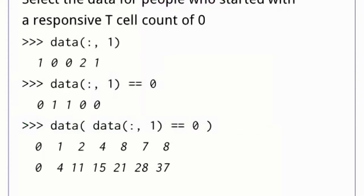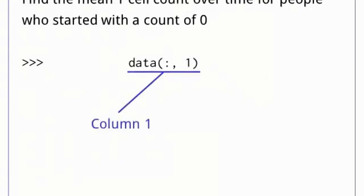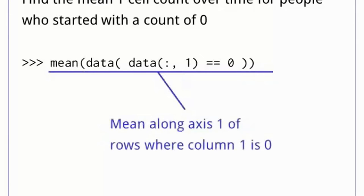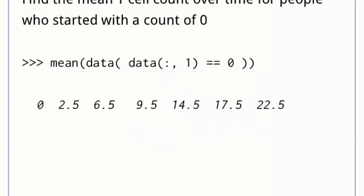It might be even more interesting to look at what happened to people who started with no responsive T-cell count at all. The first step is to select the first column of data, i.e. the initial T-cell counts for each patient. If we compare these to 0, we get a Boolean array with true for each row that meets our criteria. If we use this to index the original array, we get the two rows for which the count at time 0 is 0. We start by selecting column 1 and testing it to create a Boolean mask. Using that mask as a subscript gives us the rows that have 0 in the first place. We can now use the mean function along axis 1, across all patients, which gives us the average behavior of patients who started with no responsive T-cells at all.